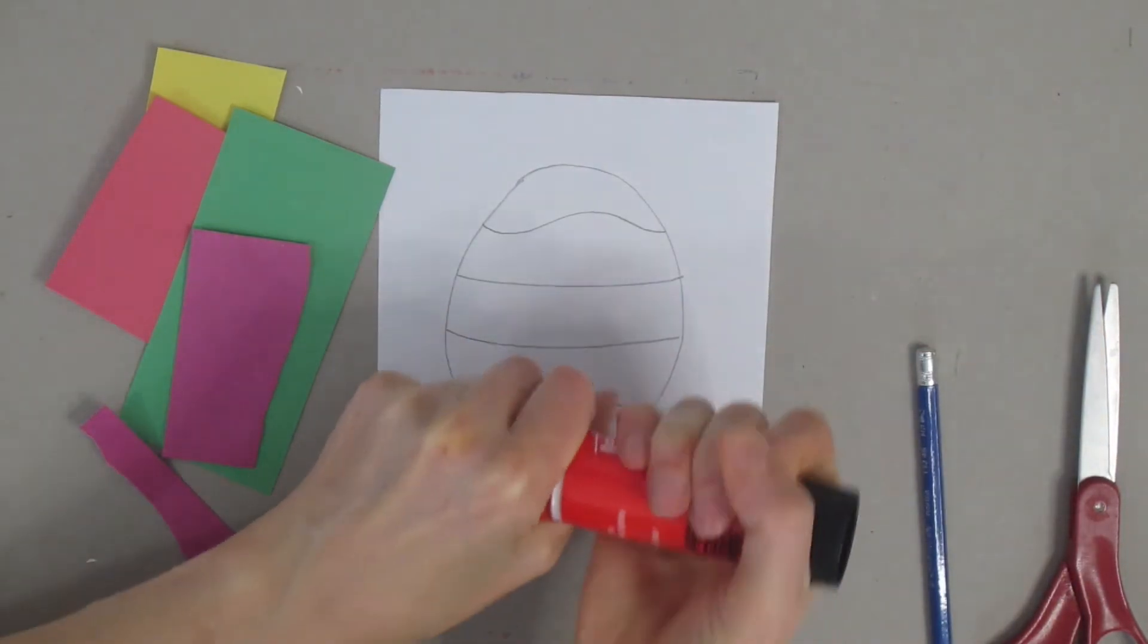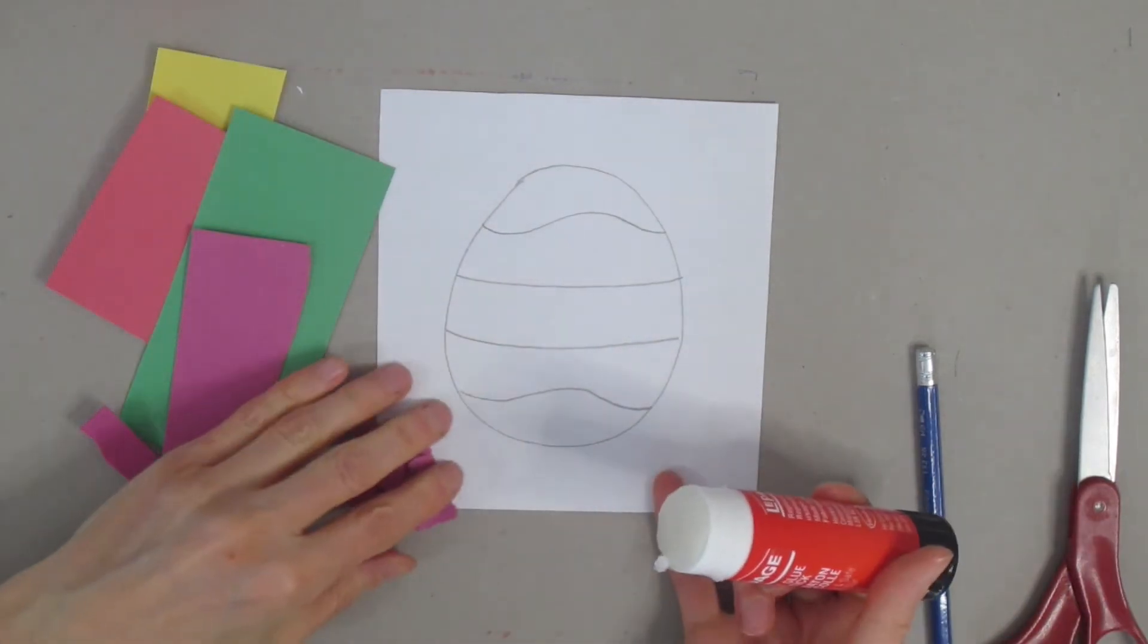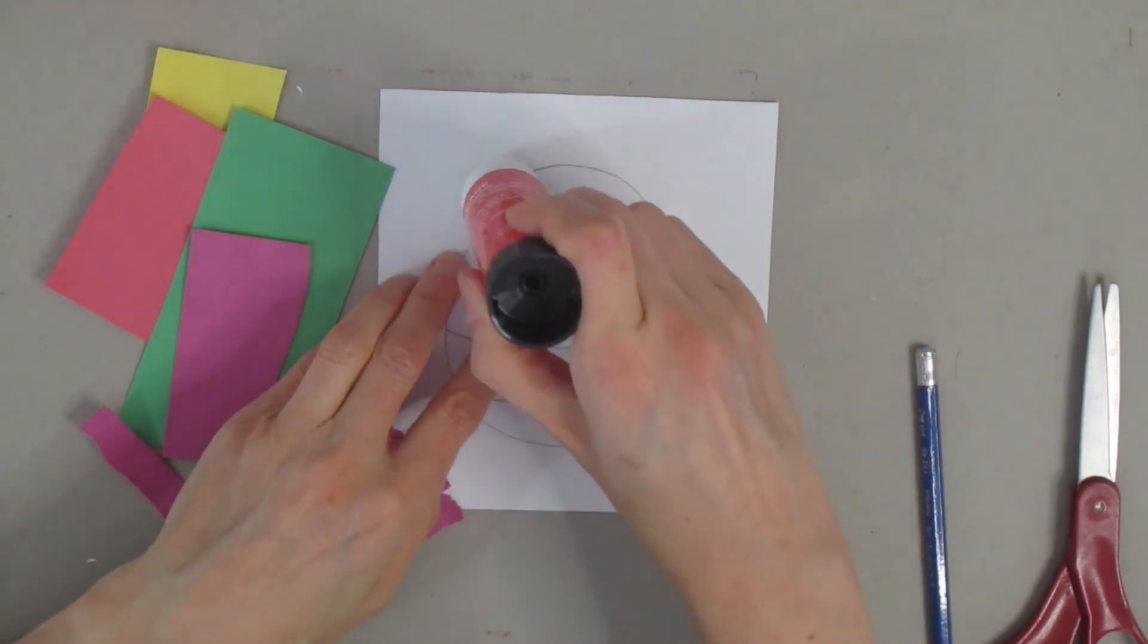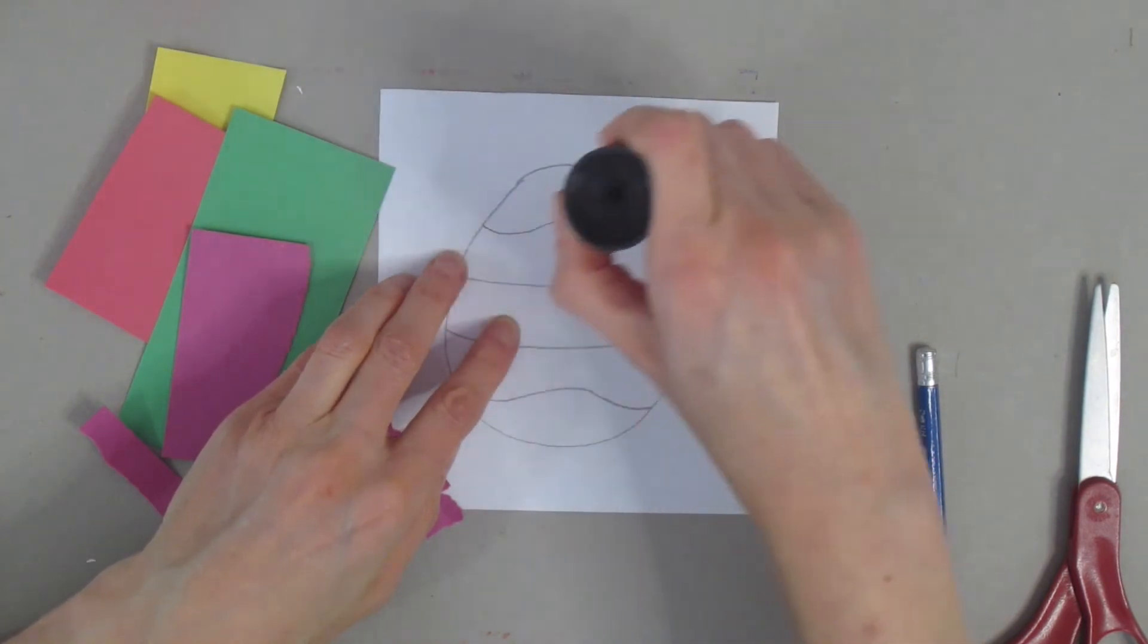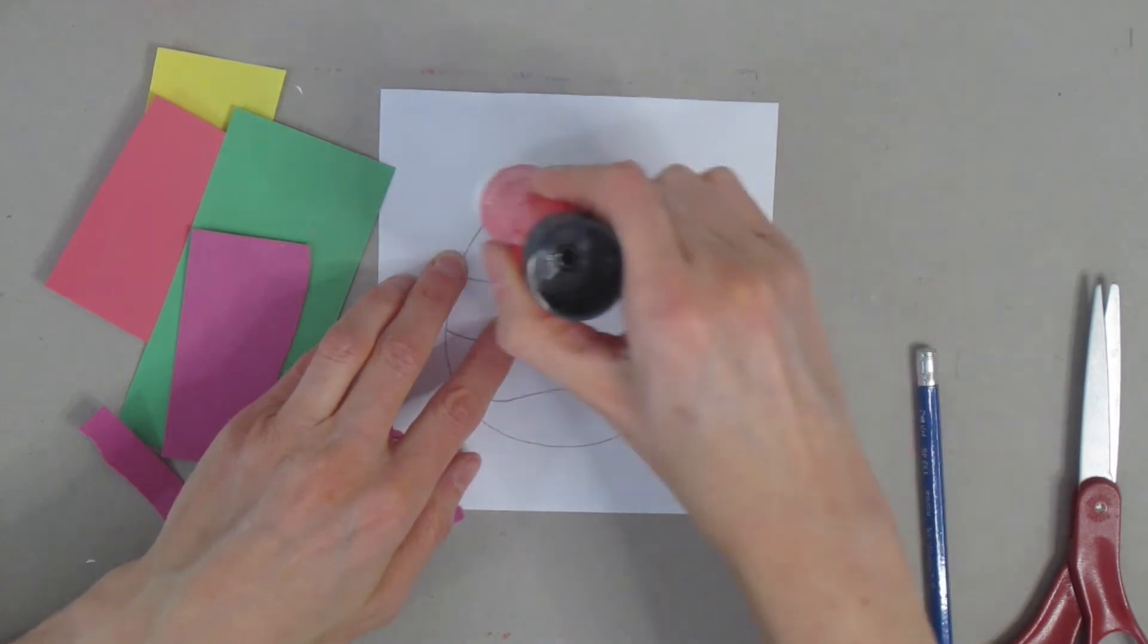Once you have your little pieces of paper, you're going to use your glue. I like to start right at the top and just do my first little section, so just that first little part. Put glue all across.